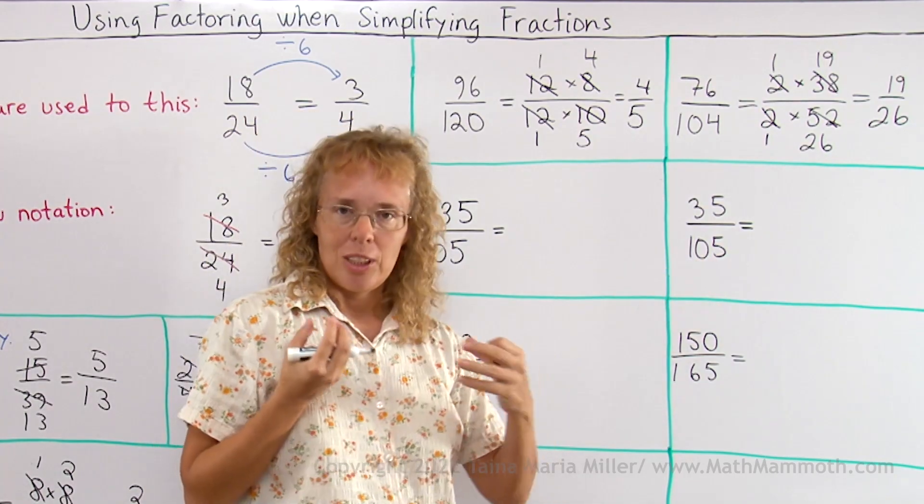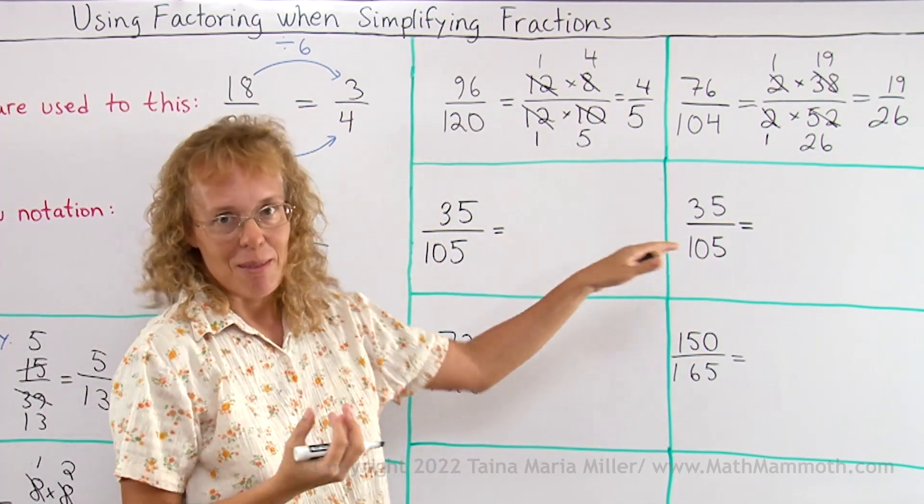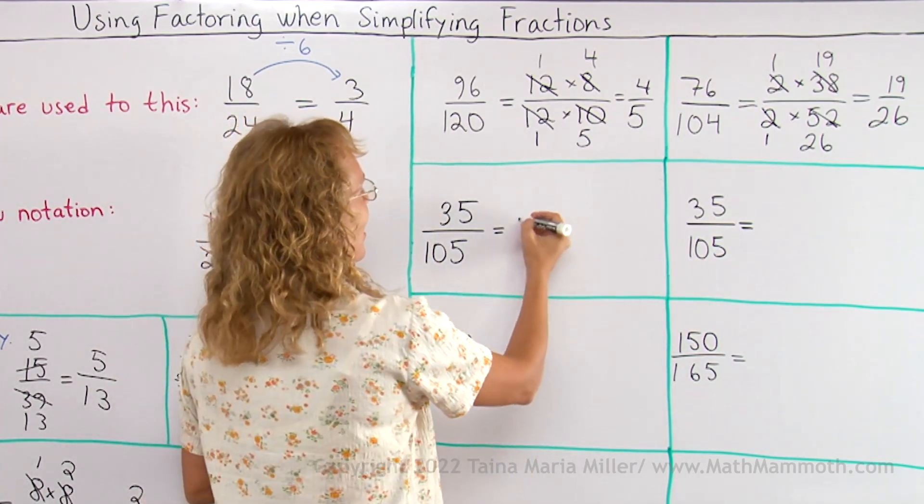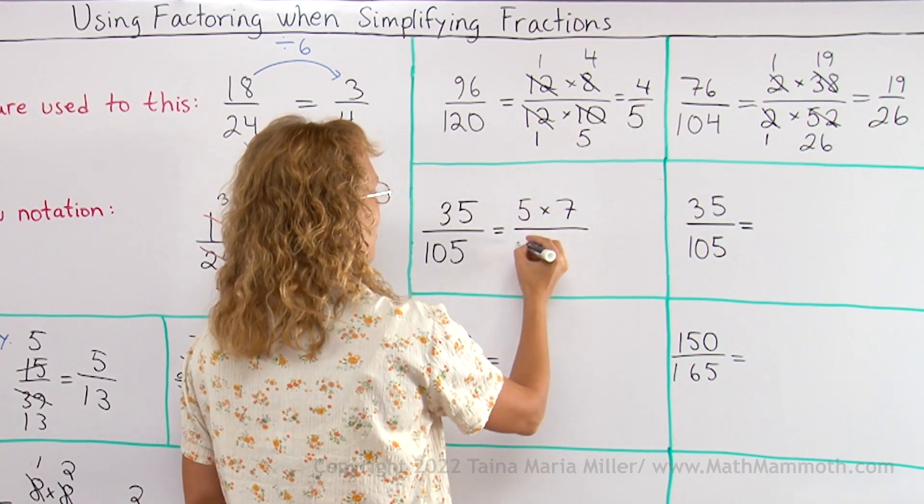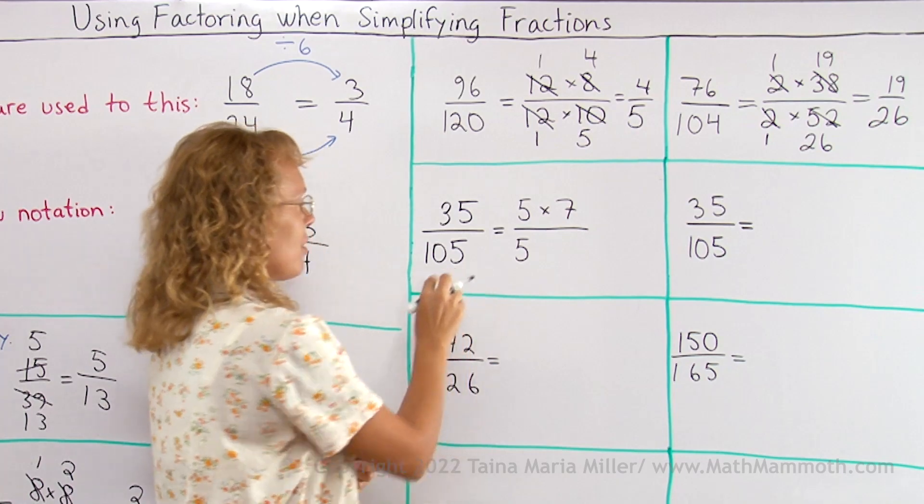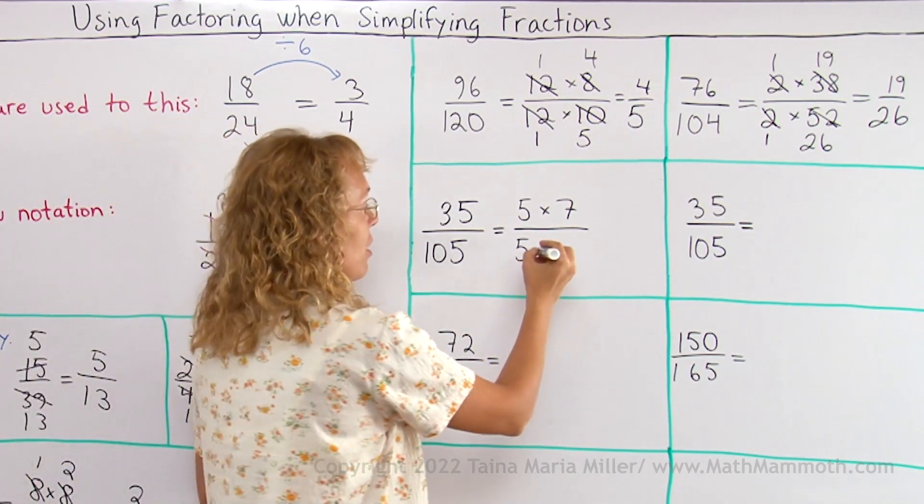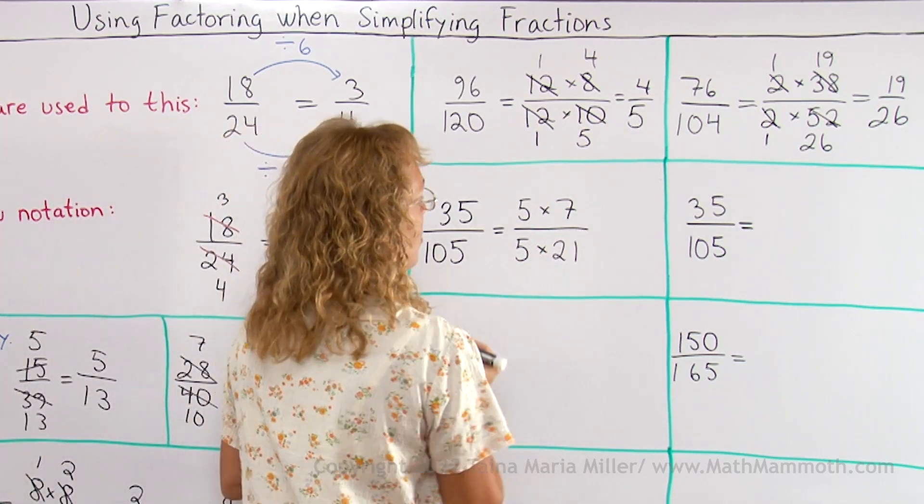Here I want to show you a principle. That's why I have the same fraction both ways. I'm gonna write it here as 5 times 7, and write this one as 105 is divisible by 5, so it's 5 times 21.